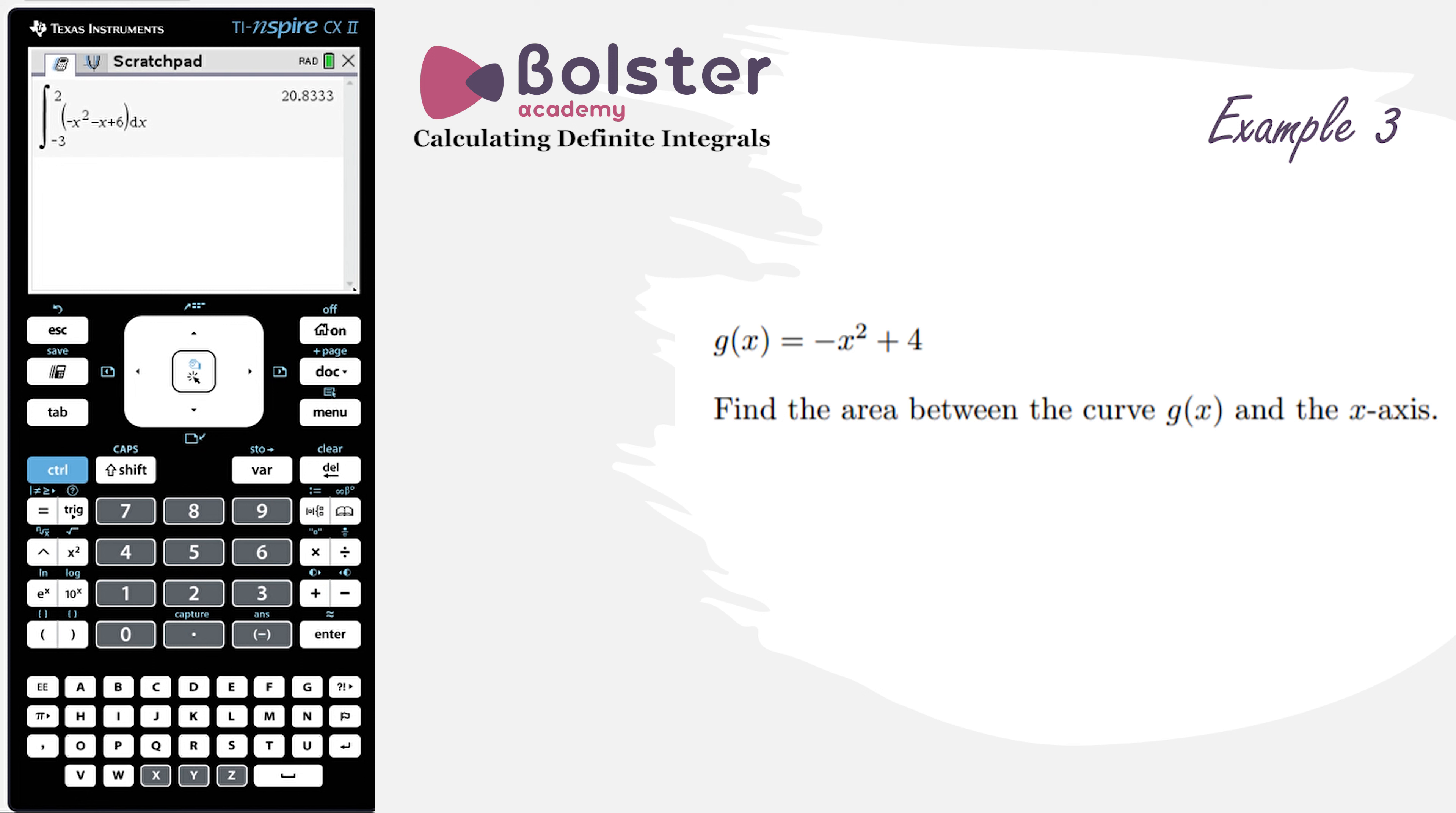Now, in this question, we don't have a diagram, so we're going to have to graph this function ourselves. So we're going to go back into Scratchpad, but we've got some stuff here that we don't want from the first part of the question. So we're going to menu, option number 1, and option number 4, delete all.